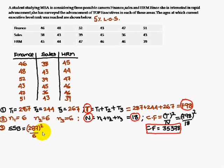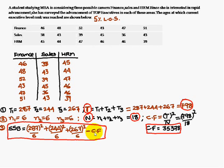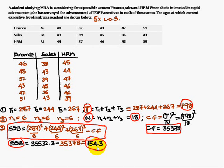Third step: find SSB, the sum of squares between the samples. This equals (287² / 6) + (244² / 6) + (267² / 6) minus the correction factor. Simplifying this gives SSB = 154.3. Remember: SSB = 154.3.